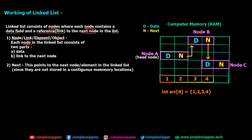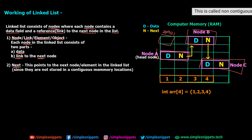Each node in the linked list consists of two parts: the data part and the link part. This link is also known as the next value, which points to the next node or element. Since nodes are not stored in contiguous memory locations, we need an address-storing mechanism to point to the next node. As you can see in this diagram, each box in computer memory has its own unique address — let's say hash 001 and so on. Consider this as RAM.